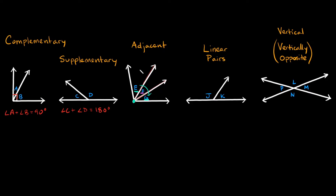To get from angle E to angle G you'd basically have to skip over F, so they're not next to each other. And to make something clear — say we had angle X and angle Y. Are these adjacent angles? No, they're not. Even though they're technically next to each other, they have completely different vertices. So they're just two completely different angles. They have to have the same vertex.